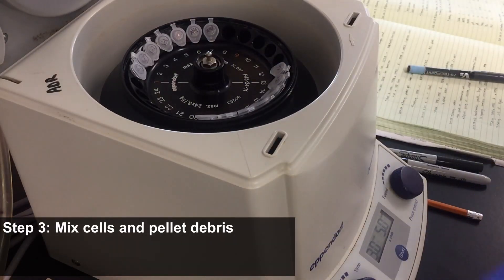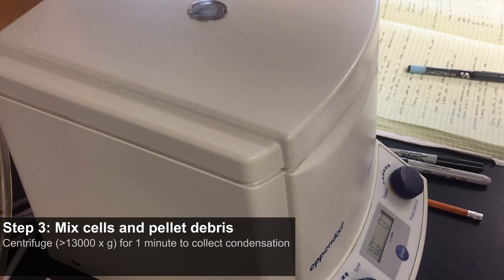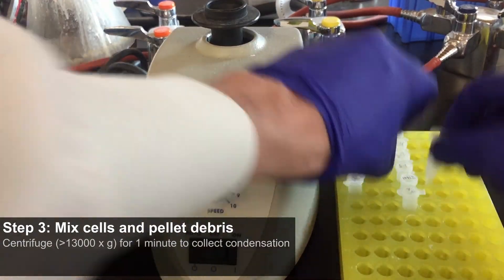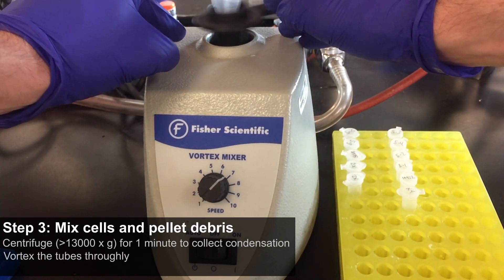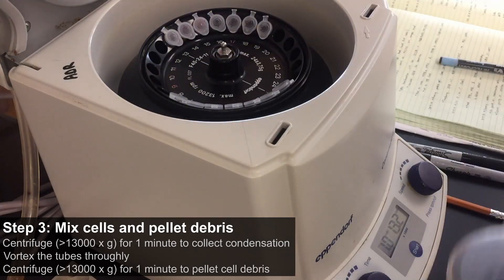Step 3: Mix cells and pellet debris. Centrifuge at 13,000 times gravity for 1 minute to collect condensation. Vortex the tubes thoroughly. Centrifuge at 13,000 times gravity for 1 minute to pellet cell debris.